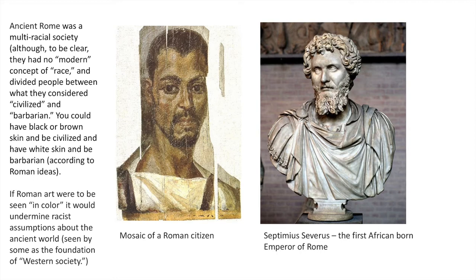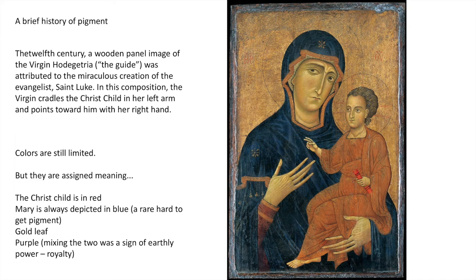If Roman art were seen in color, it would undermine racist assumptions about the ancient world, seen by some as the foundation of Western society. Here you see a mosaic of a Roman citizen, and on the right the first African-born emperor of Rome. In the 12th century, here's an example: a wooden panel of the Virgin Mary, attributed to the miraculous creation of the evangelist St. Luke. Colors are still limited but have expanded a little. Color carries symbolic meaning — the Christ child is in red, Mary is almost always depicted in blue, which was a rare and hard-to-get pigment. Gold leaf demonstrates wealth, and purple is a sign of earthly power and royalty.